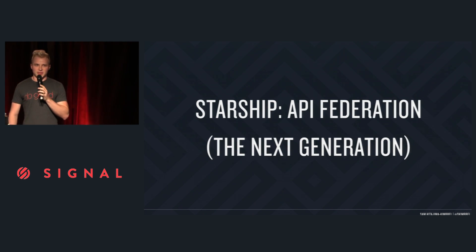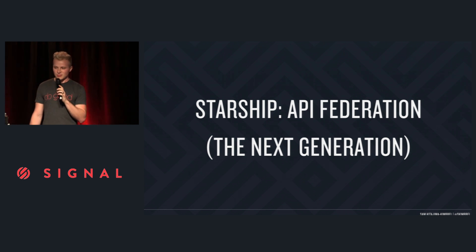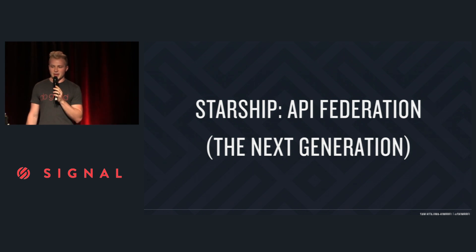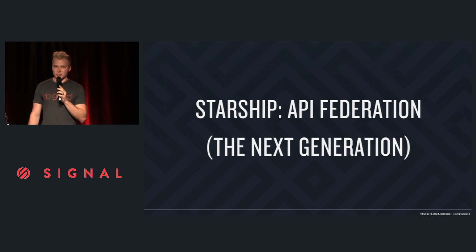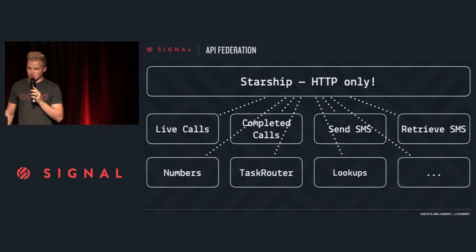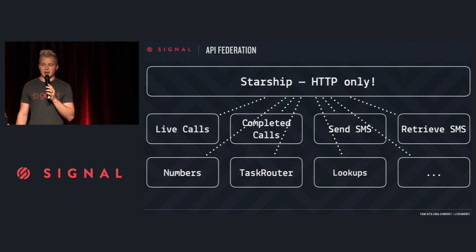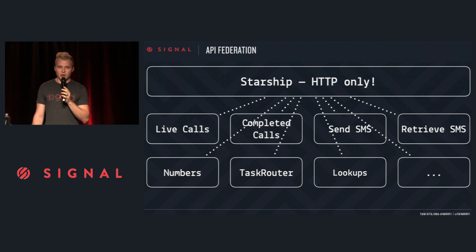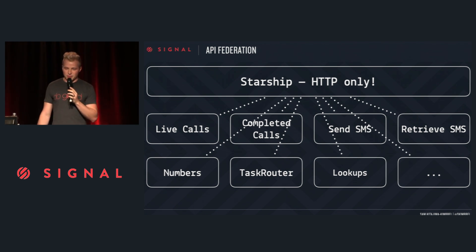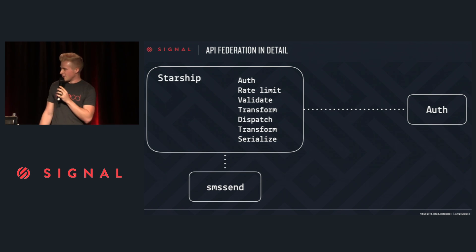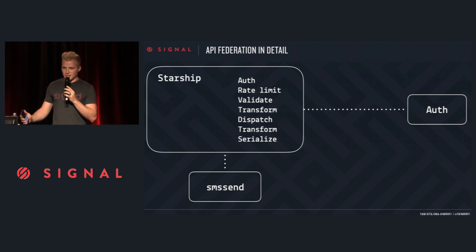Welcome to the next generation of the Twilio API — we call it Starship. Starship is a Python-based HTTP REST proxy that federates all those unique internal services into a unified public API. It has a single workload: your API requests come in as HTTP, and we make internal REST requests — more HTTP goes out. Starship is the front door to the Twilio API. We take the public API requests, transform them to meet the requirements of our internal services, route them, wait for the response to come back, and hand it back to you. We authenticate, apply rate limiting, validation, fix the impedance mismatch, hand it off to the internal service, get the response back, serialize it, and send you the response.